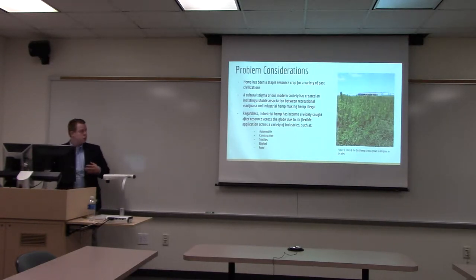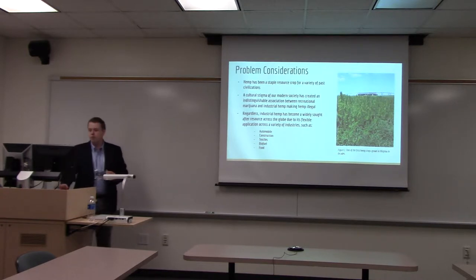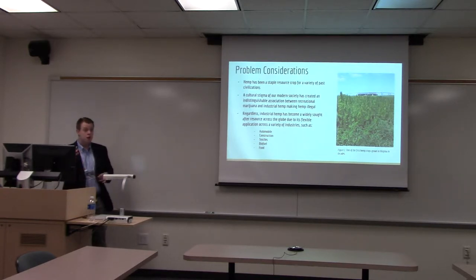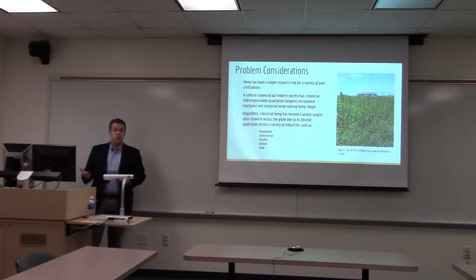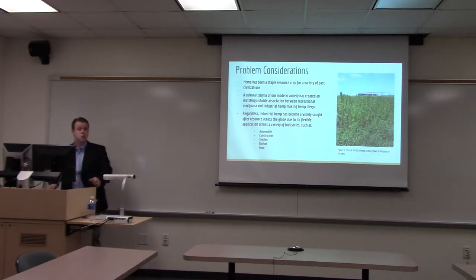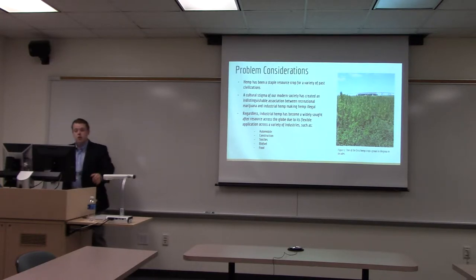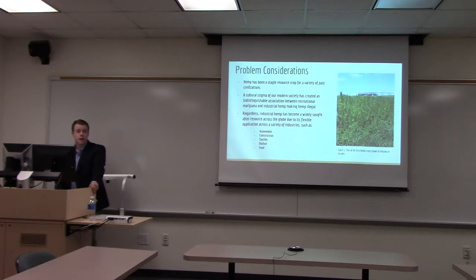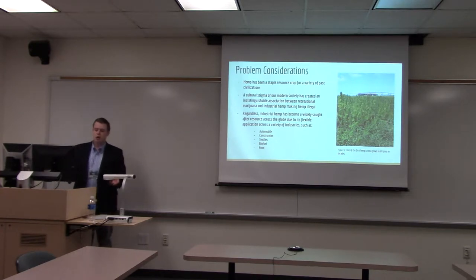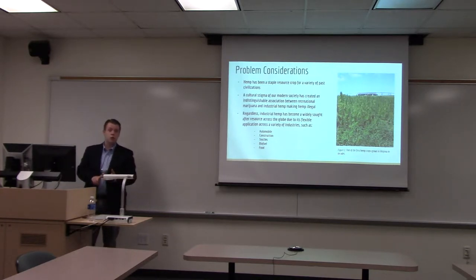Some considerations to take into account with this problem: hemp has been a stable resource crop for millennia, dating back as far as the ancient Chinese, and it was one of the first uses for paper. Now we have a serious cultural stigma causing an inability to distinguish hemp and marijuana apart. Regardless, industrial hemp has become a widely sought-after resource crop because of its applications in automotive, construction, textiles, biofuel, and especially food.